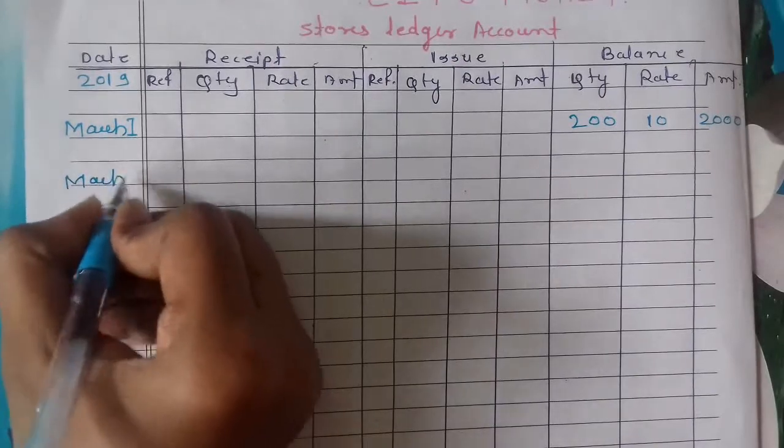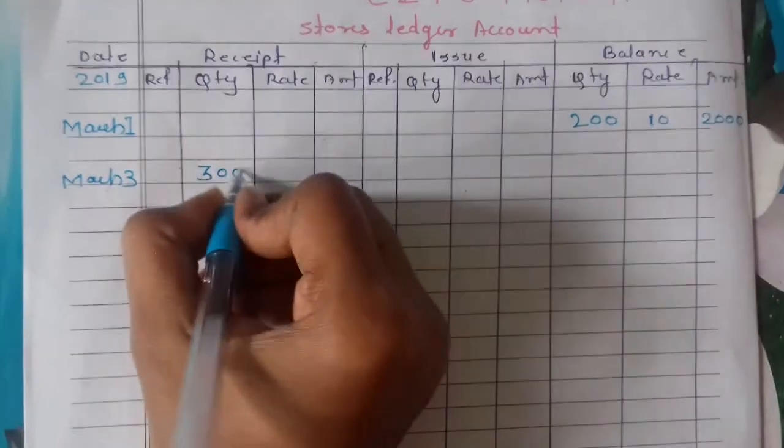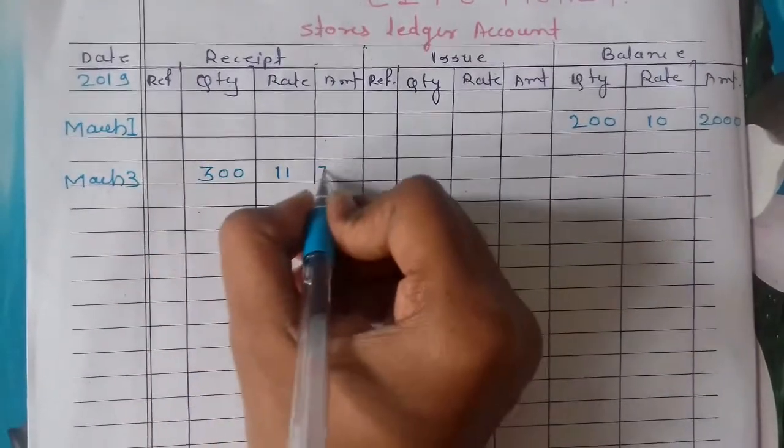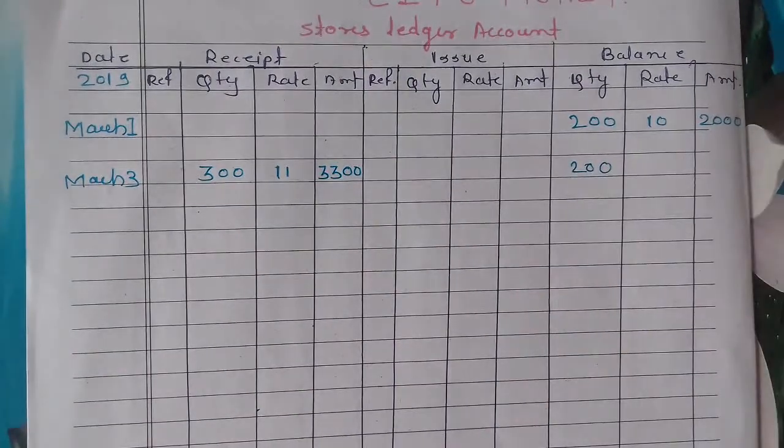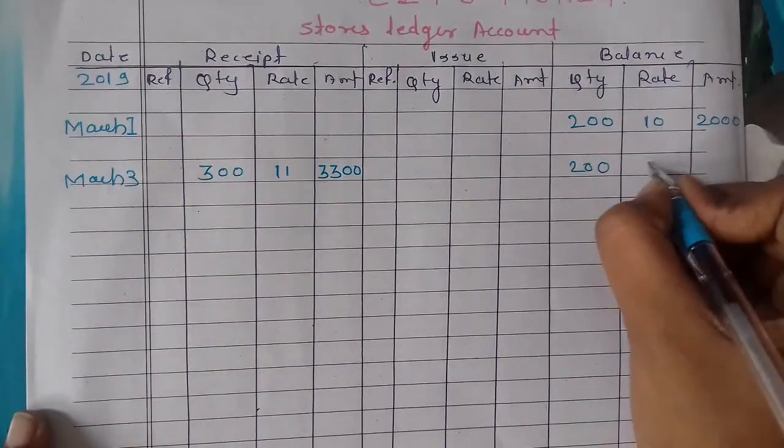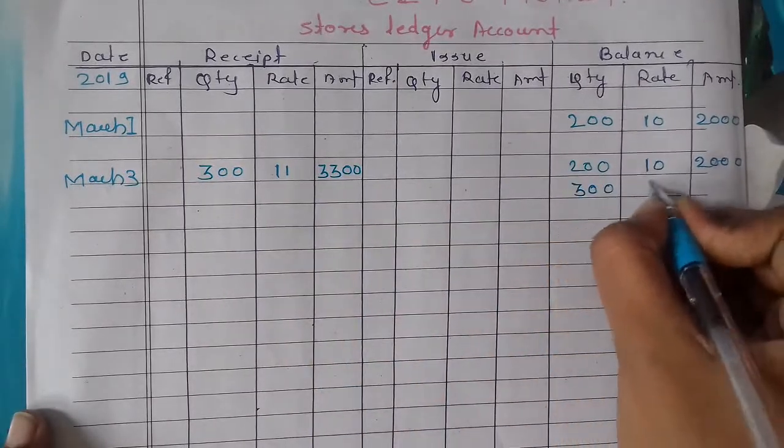Next is March 3. 300 units purchased at rate 11, amount 3300. Look at the balancing figure: 200 units at rate 10 is 2000, and new stock 300 units at rate 11 is 3300.